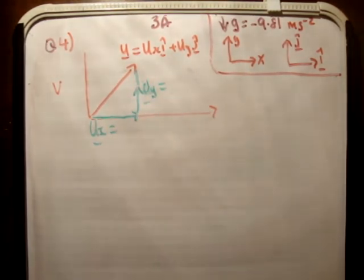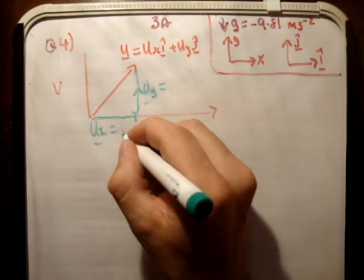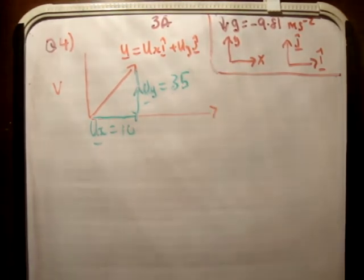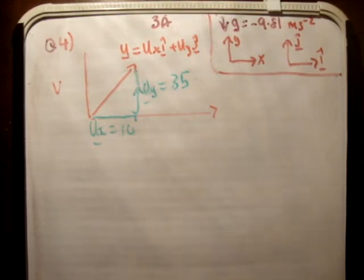Only these ones, u-sub-y and u-sub-x, like that. So we know that u-sub-x is equal to 10, because we're given that, and u-sub-y is equal to 35, like so. And we'll say that we also have an angle of theta, just for the crack as well.